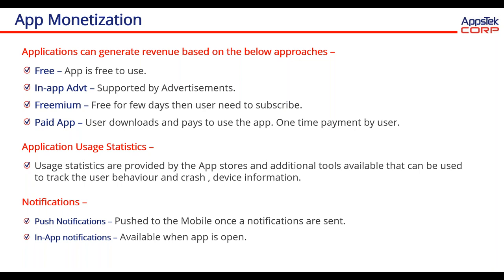Notifications are one important area where notifications can be sent to mobile users. There are two ways: one is push notifications, which are pushed to the mobile once a notification is sent from the backend systems — users get notified and can then open the app. The other is in-app notifications, where the app has to be open to see those notifications. Push notifications are used a lot in messaging applications.